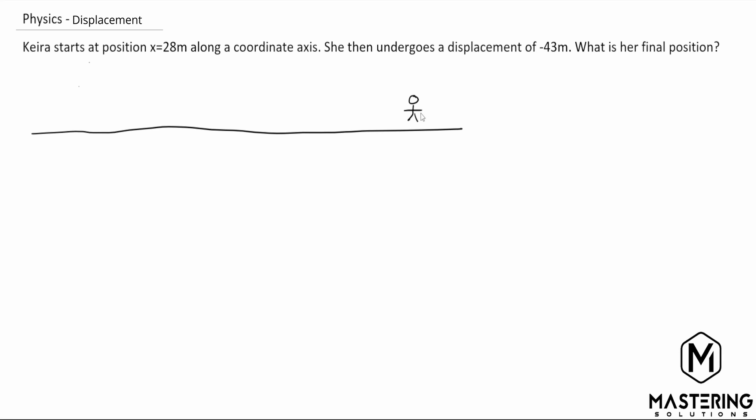So if we have here, this is Kira, she is standing at 28 meters. Now I like to just think of this as a coordinate grid. So here we have zero and then up here we have 28 in the positive direction and if we go this way along zero obviously it's the negative direction.